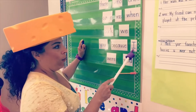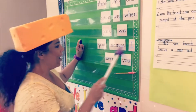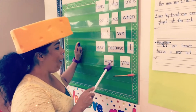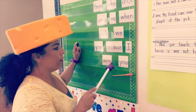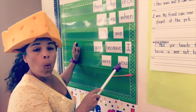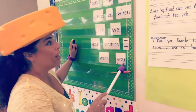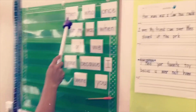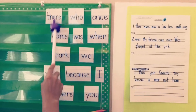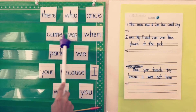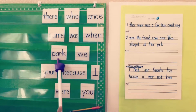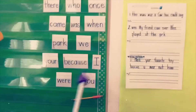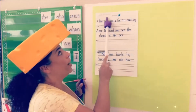Everyone knows this one — it's i. w-e-r-e, were. y-o-u, you. Let's go one time super fast — you say it at my point and I'll say it with you: there, who, once, came, was, when, park, we, your, because, i, were, you. Okay, make sure you have all of those.